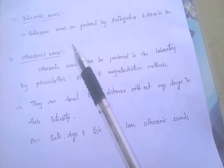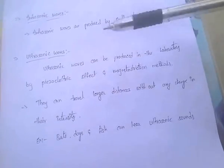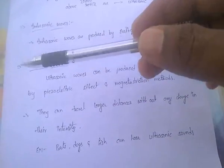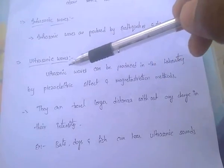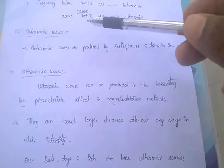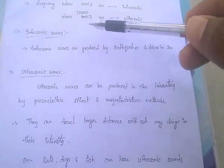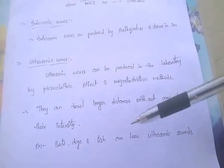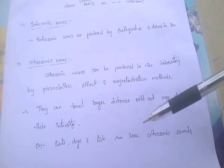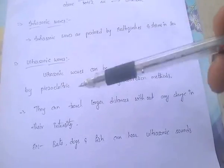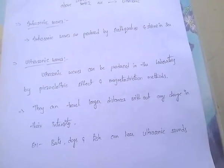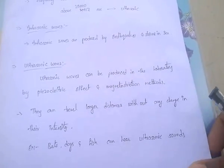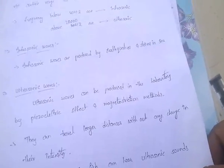These ultrasonic waves can be heard by bats, dogs, and fishes. Ultrasonic waves are waves whose frequency is greater than 20,000 Hz. Bats, dogs, and fishes can hear these ultrasonic sounds.